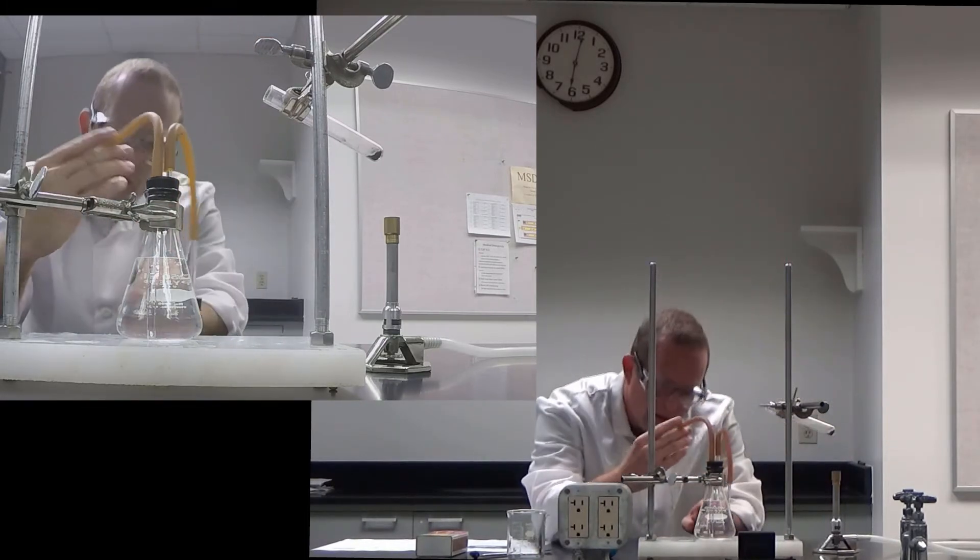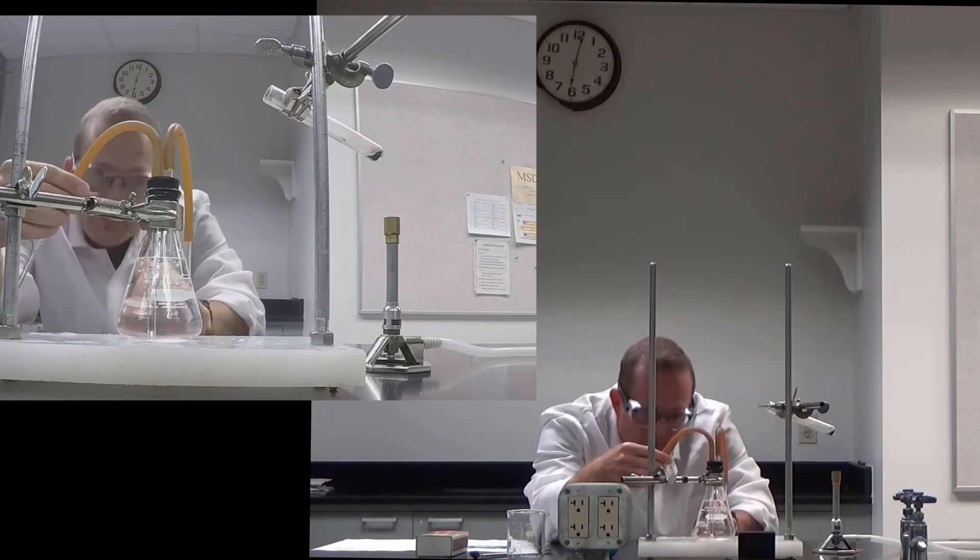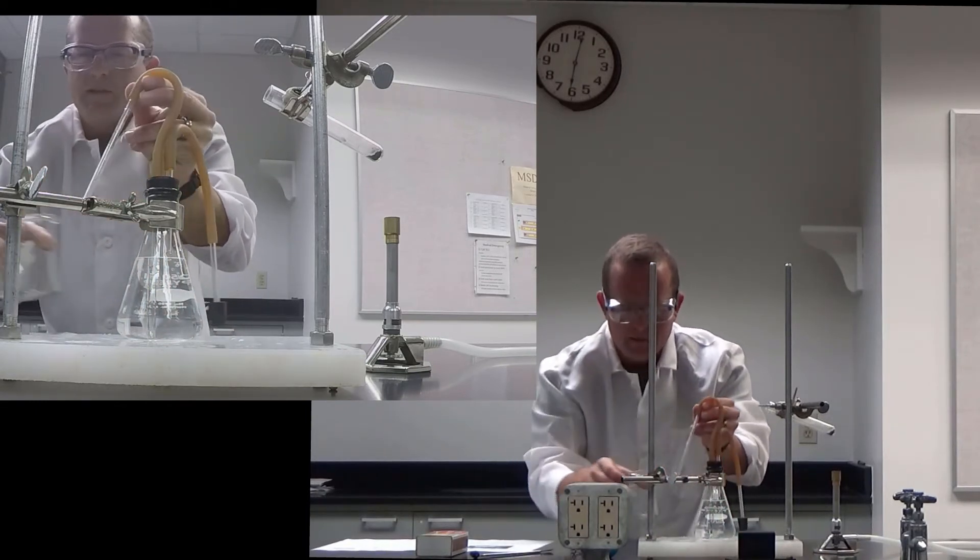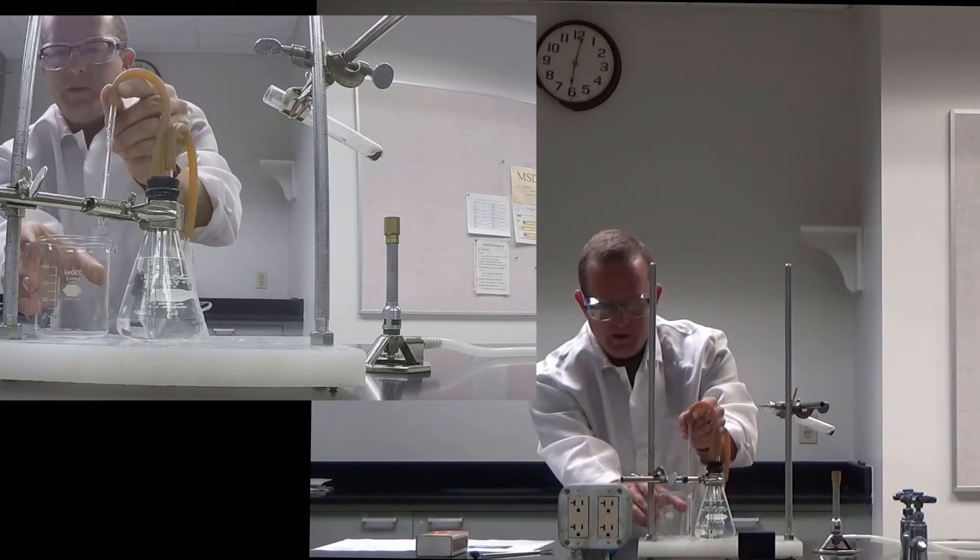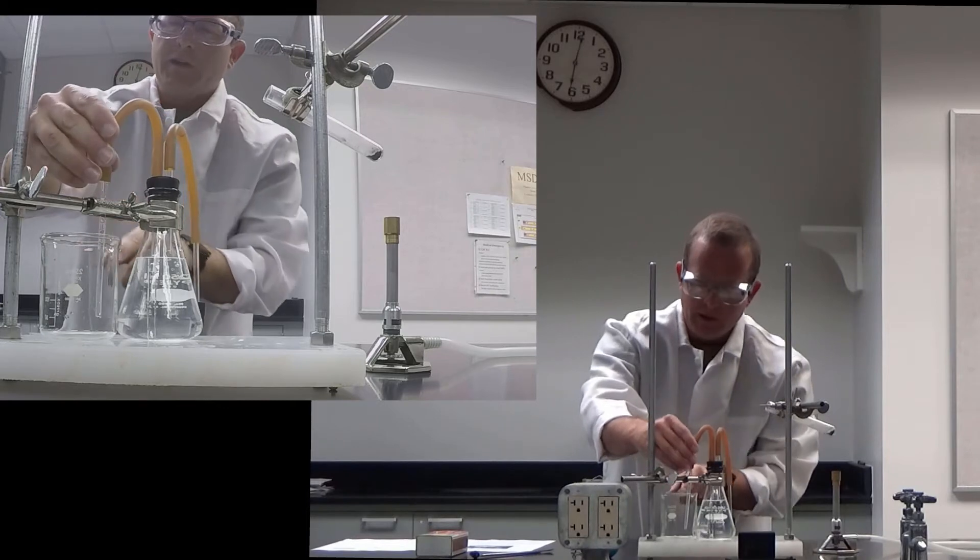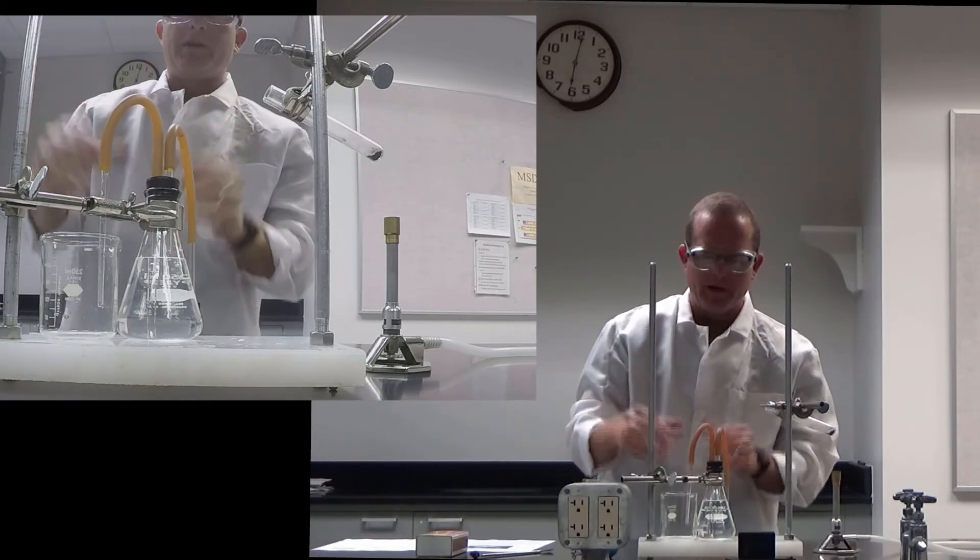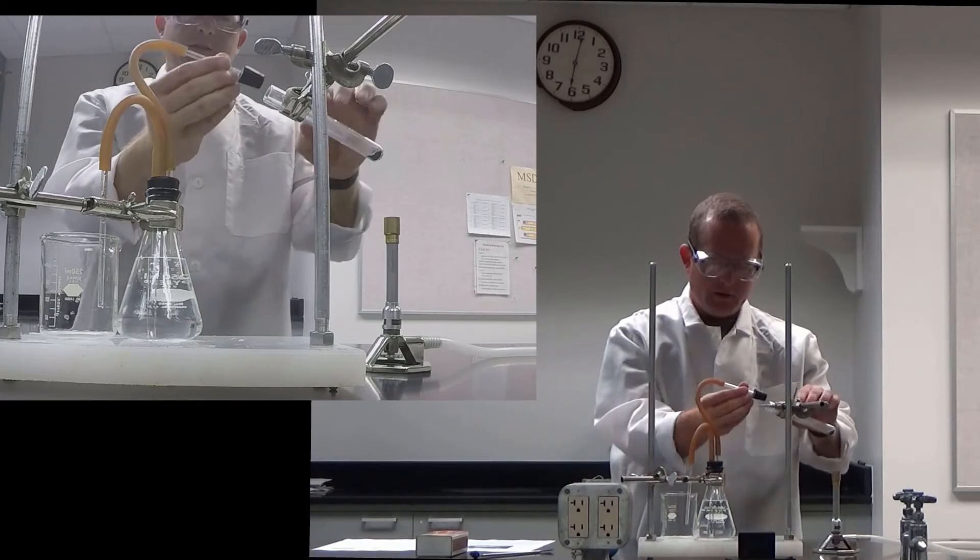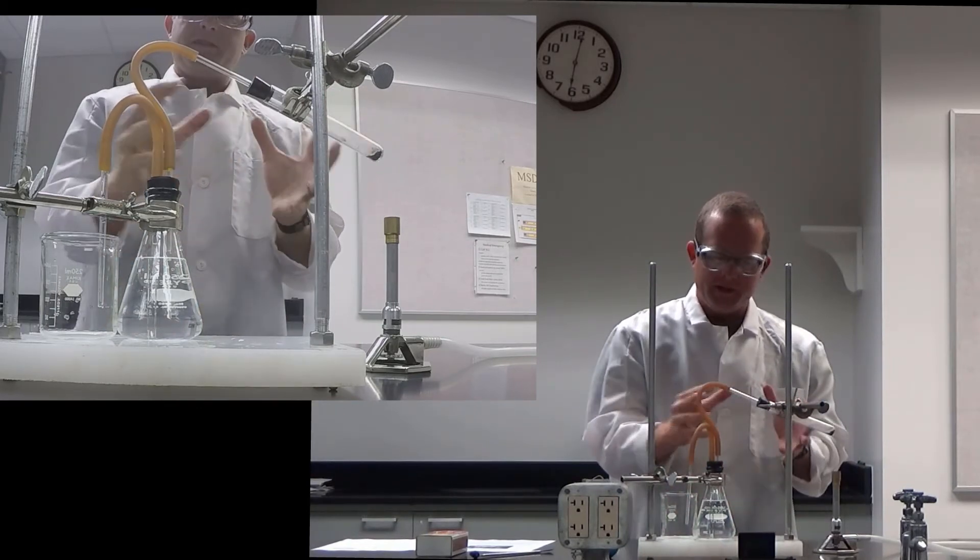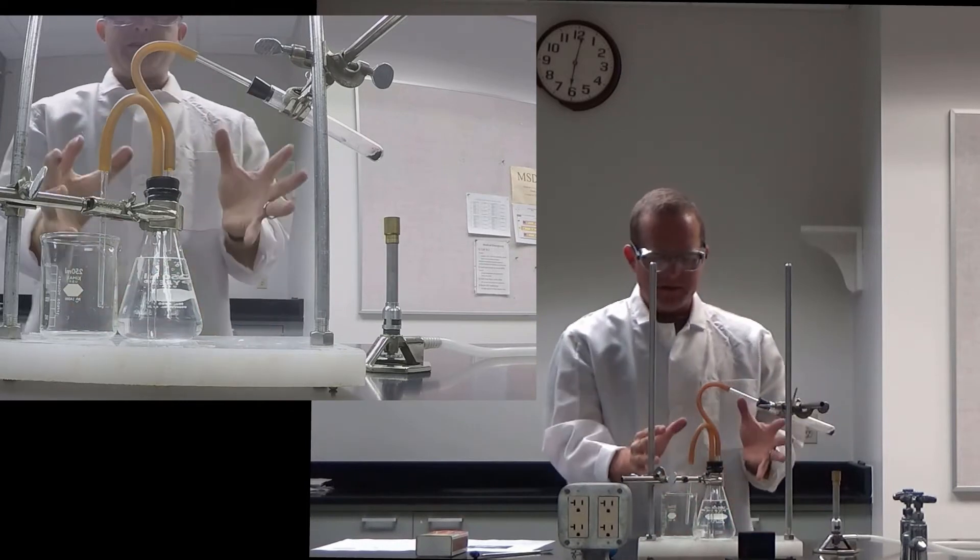So we'll place our Erlenmeyer in its holder. And very important, the longer tube, the one that goes down to the bottom of the Erlenmeyer, is our exit tube. So that tube has to be placed in this beaker here. And I'm just going to put it within the clamp here so it can be held secure and it won't flop around. This little guy will go here with the rubber stopper to make a seal for the whole system. So now the system is sealed.